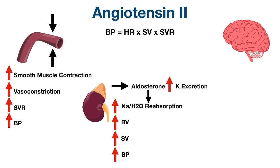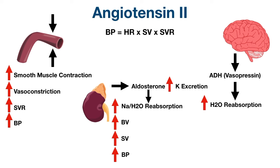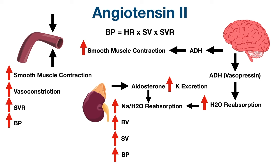The final major effect of angiotensin 2 is that it stimulates the release of antidiuretic hormone, also known as vasopressin, from the posterior pituitary gland. Antidiuretic hormone primarily acts on the collecting duct to increase water reabsorption, increasing blood volume, stroke volume, and blood pressure. Additionally, vasopressin receptors on blood vessels lead to smooth muscle contraction, causing vasoconstriction, increased systemic vascular resistance, and increased blood pressure.